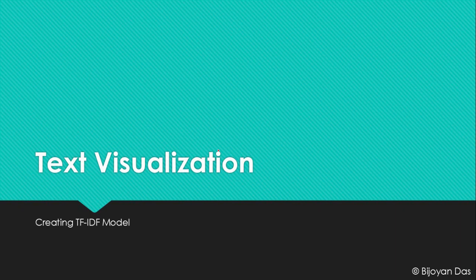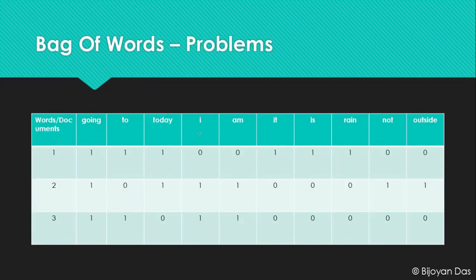In the previous video we finished building our bag of words model. In this video we are going to talk about the problems associated with the bag of words model, and we will figure out some way to build a model which is much more efficient. So when we talk about the bag of words model, there are different words and different documents — if a word appears in a document we put a one, if it does not appear we put a zero. That is the logic of the whole bag of words model.